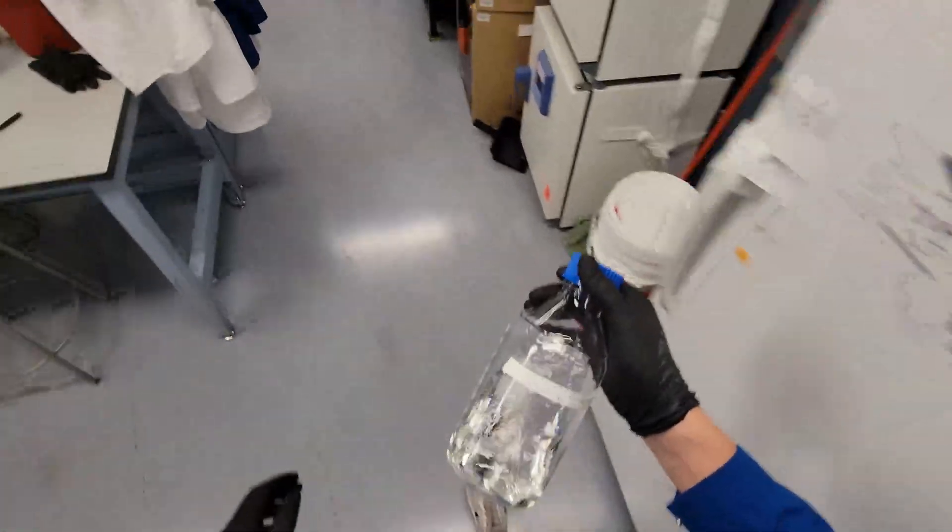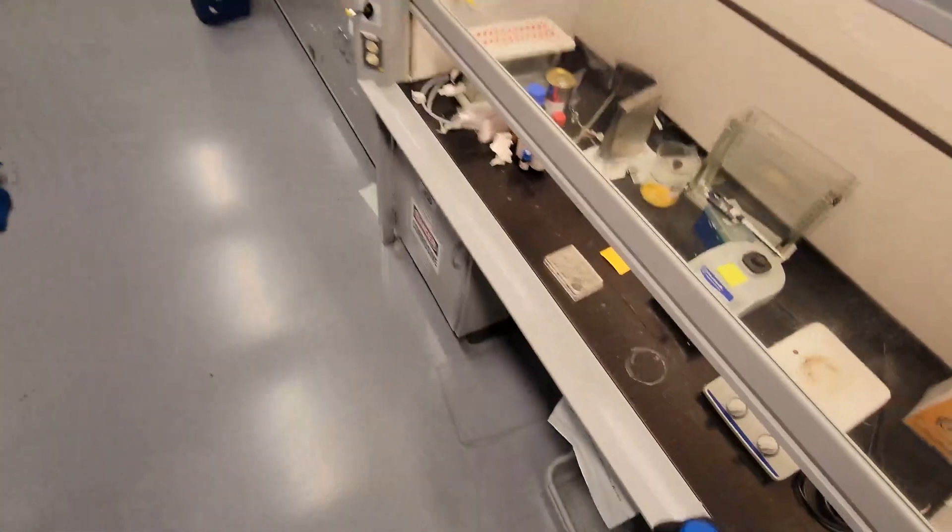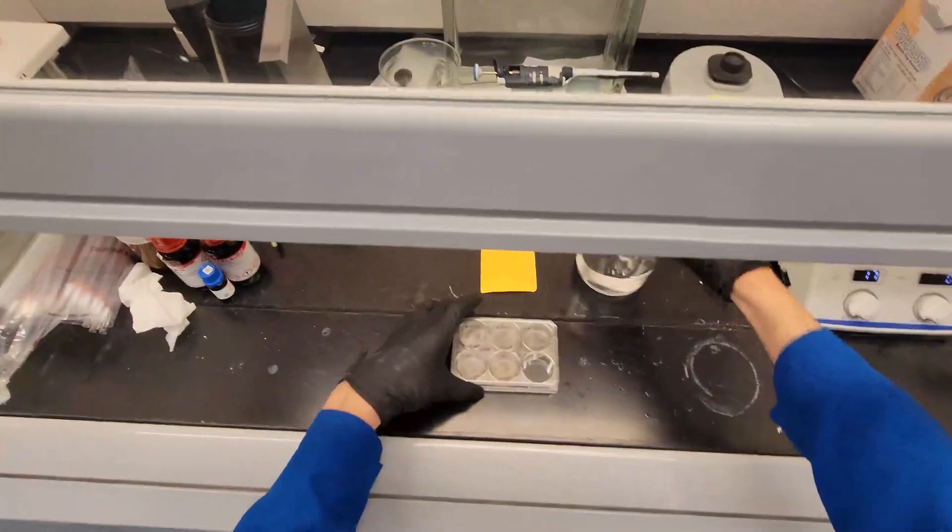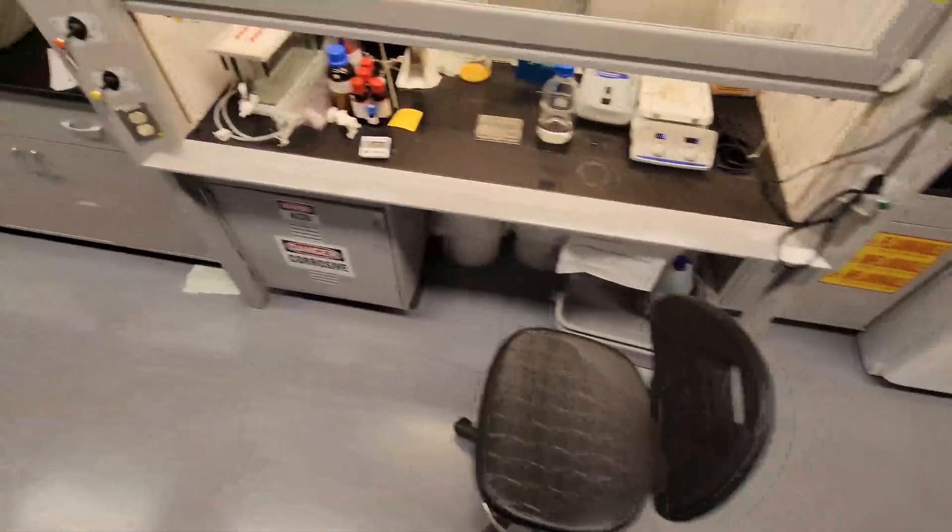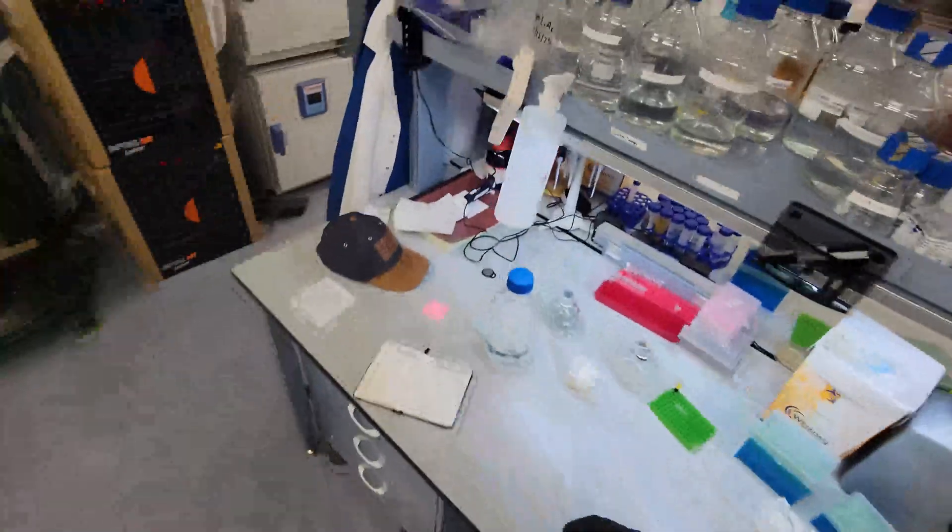Here's the chloroform from the flammables cabinet. It's also toxic. I'll lift this up a bit, maybe it helps you see better. I'm also going to need to figure out how to use the timer. I hate this thing. All right. So we need to soak these cells for 15 minutes with chloroform.